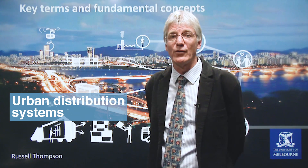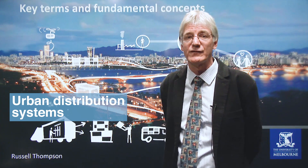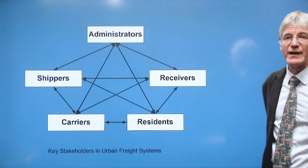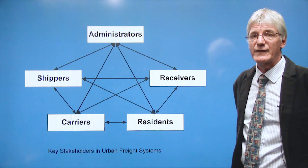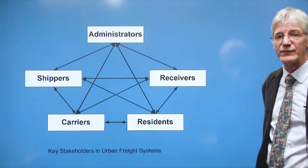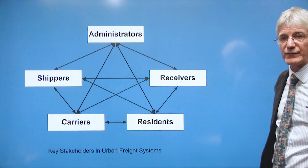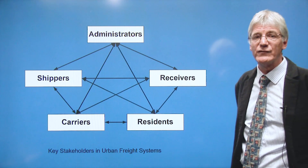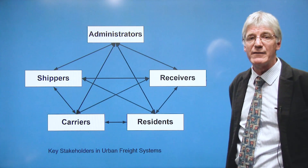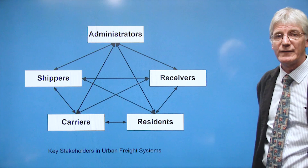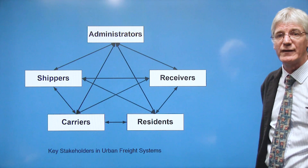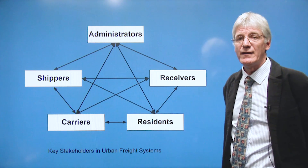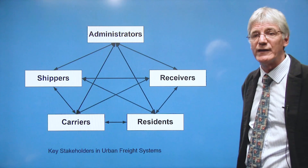Typically, urban freight systems involve shippers, carriers, receivers, and residents. Shippers are the wholesalers or producers of goods. The carriers are the vehicles and drivers. Receivers are the stores or homes. Administrators are the local or regional governments that try to promote efficiency and minimise the impacts. Residents are those persons living in urban areas that are consumers and perhaps employees in freight related industries. Their health may also be impacted by noise and emissions.